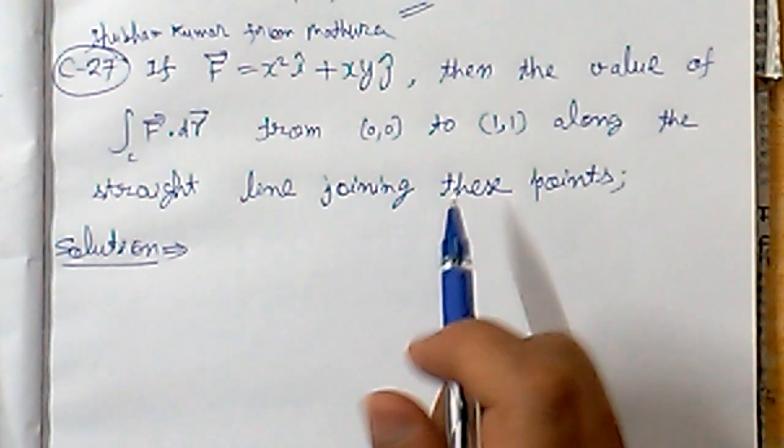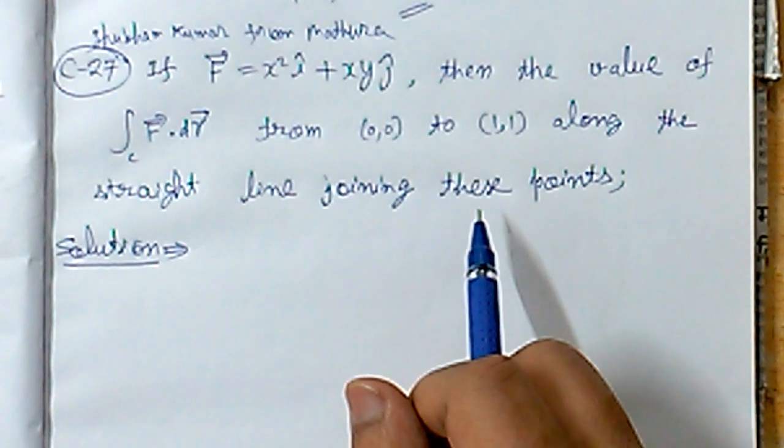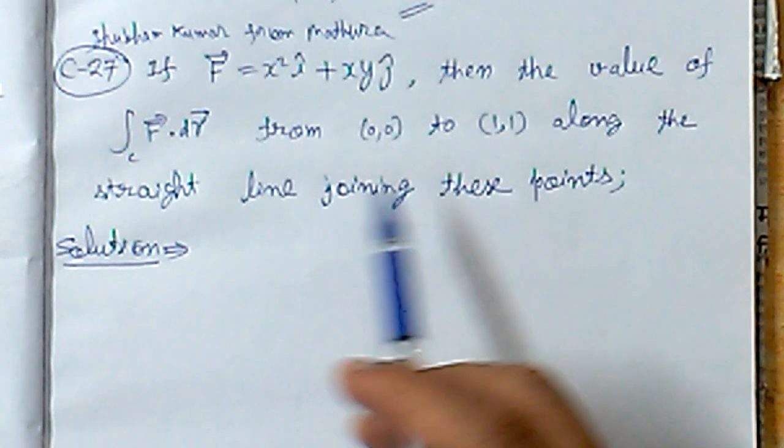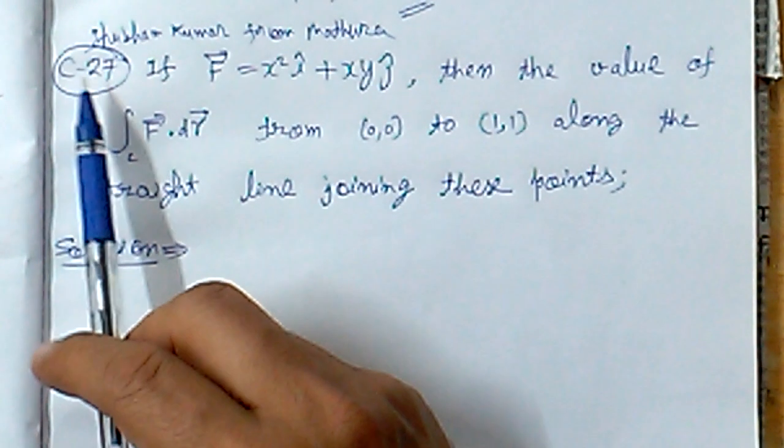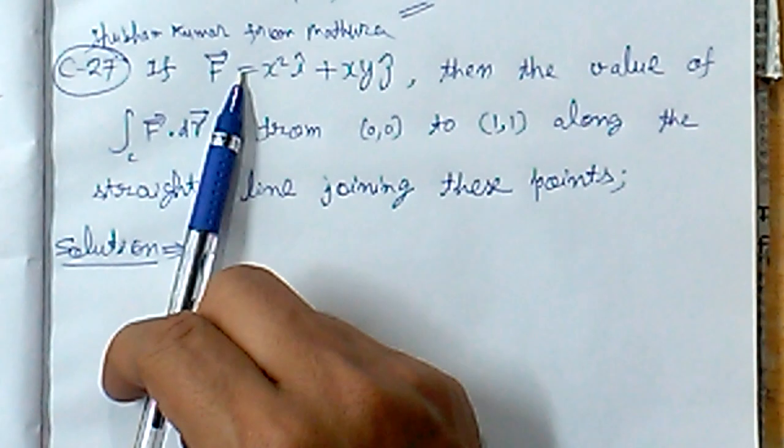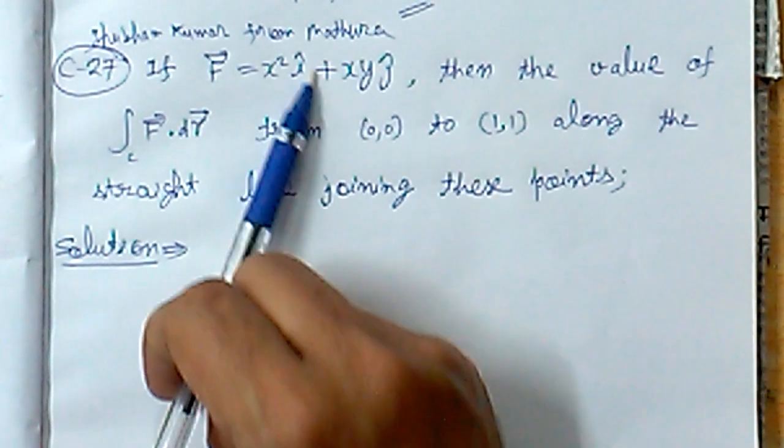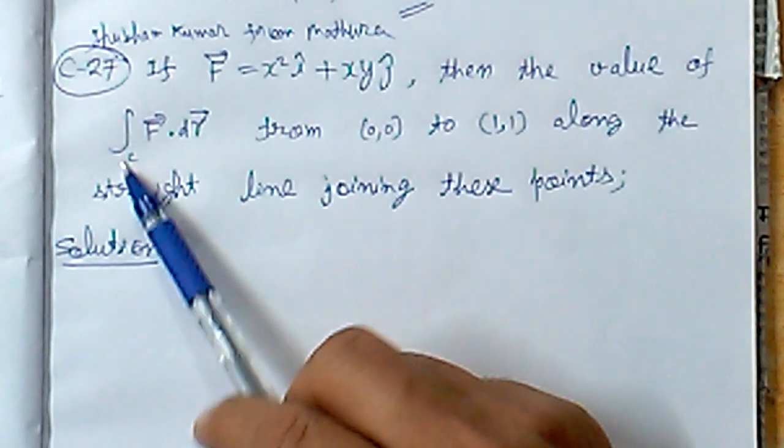Bismillahirrahmanirrahim. On the demand of Subam Kumar from Mathura, a vector analysis problem from the line integration chapter. The question is: If capital F vector is equal to x square i cap plus xy j cap, then the value of...